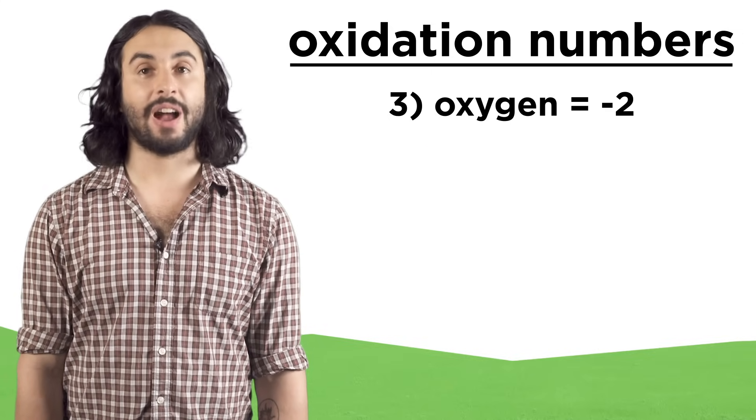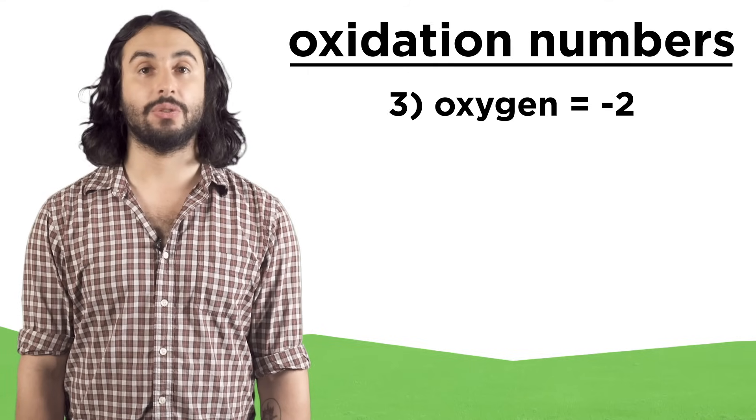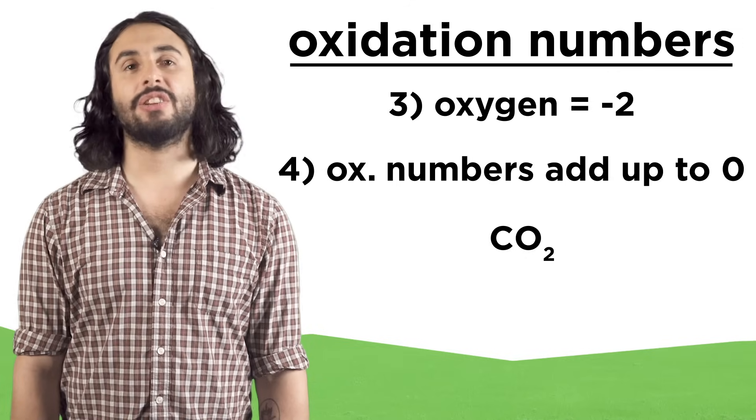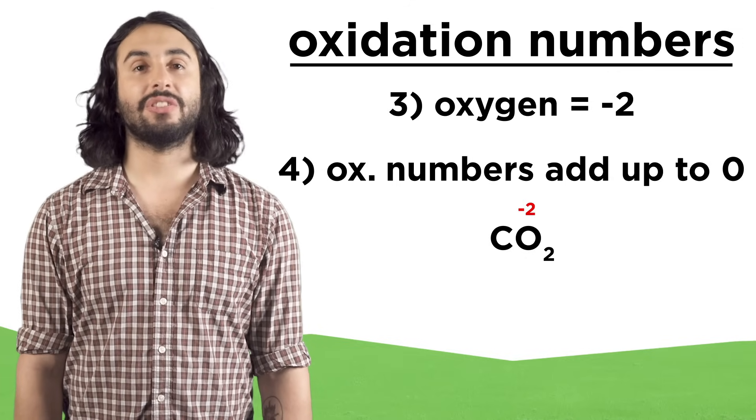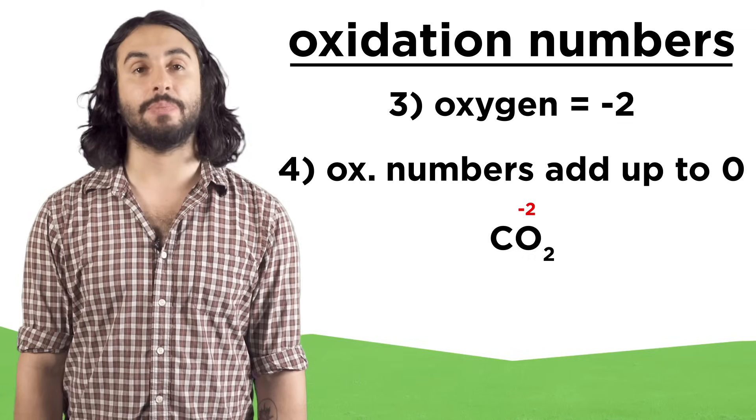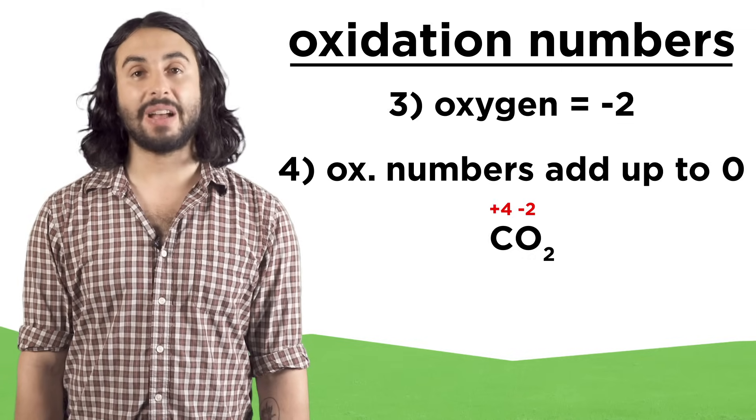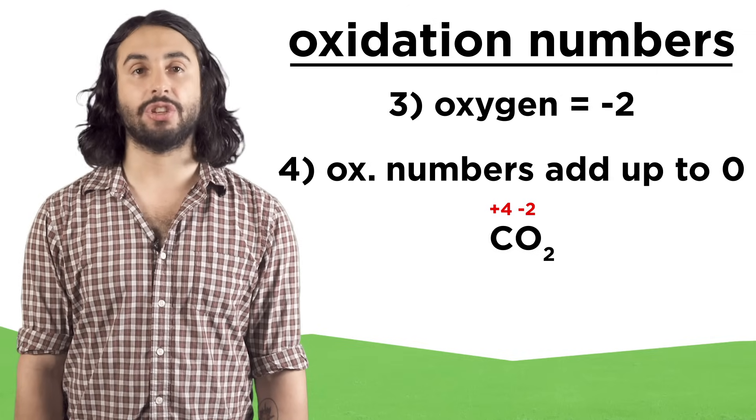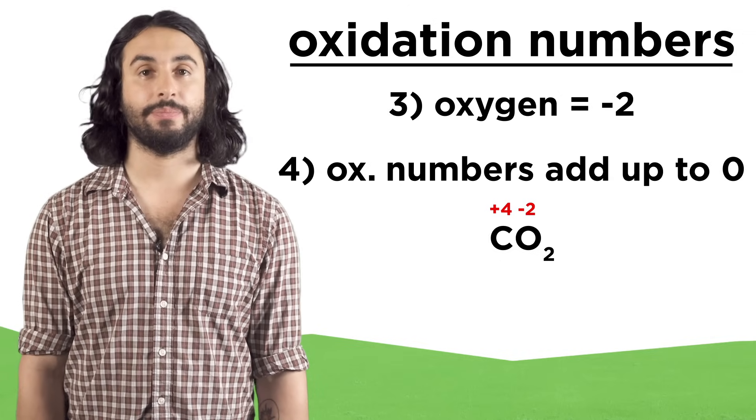For a neutral molecule, oxidation numbers must add up to zero. So if the oxygens in carbon dioxide are each -2, the carbon must be +4. For polyatomic ions, the oxidation numbers must add up to the charge on the ion.